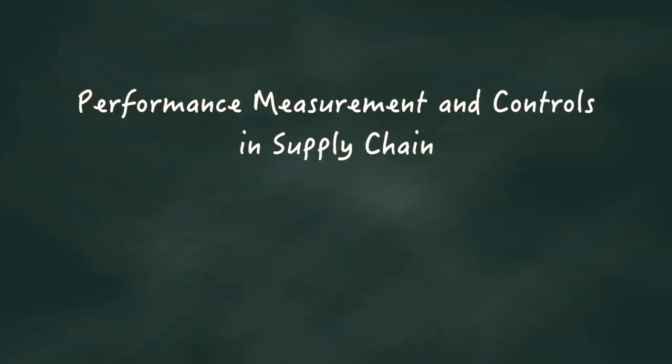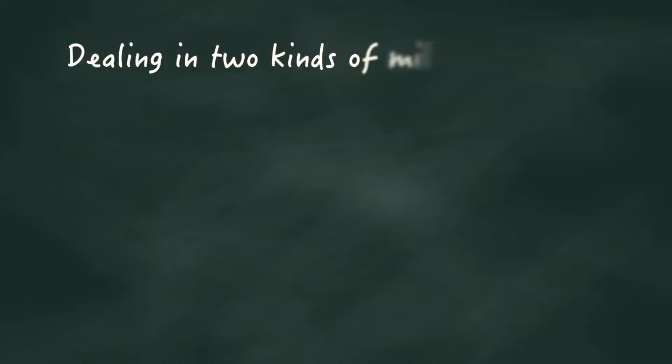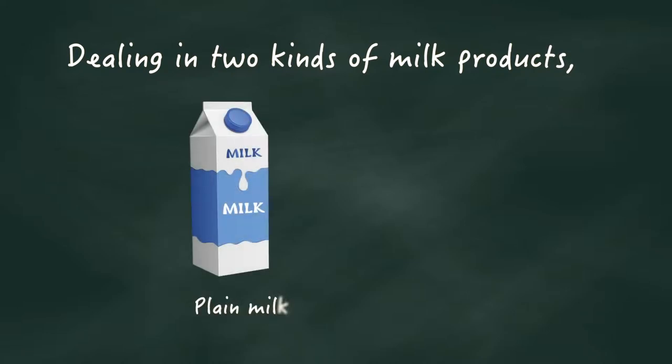Hi, this is Vivek back here again. We are going to study the second part of Supply Chain Performance Measurement. It's called the IDD. Assume we are dealing in two kinds of milk products, a tetra pack of plain milk and another of flavored milk.